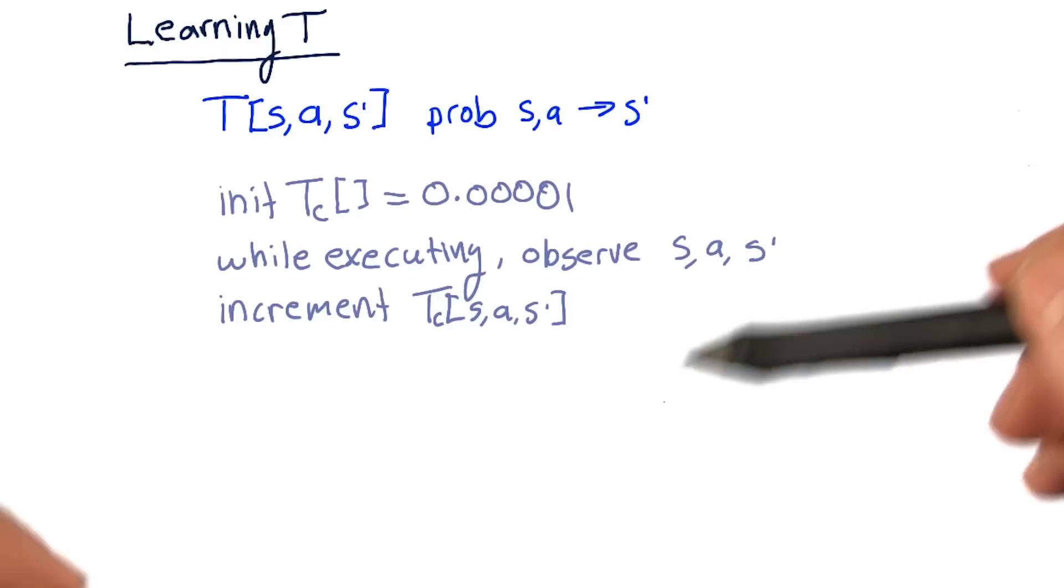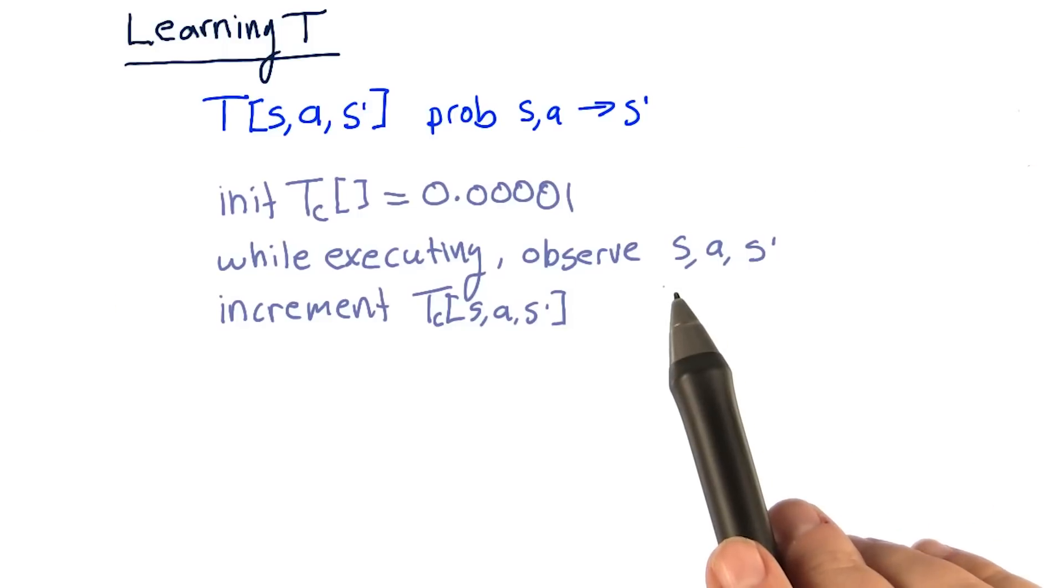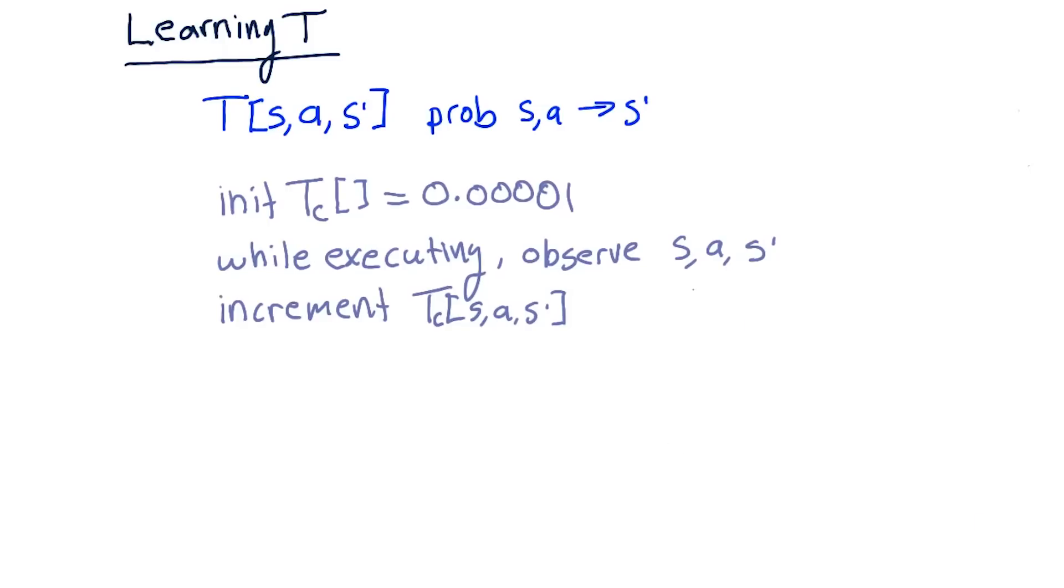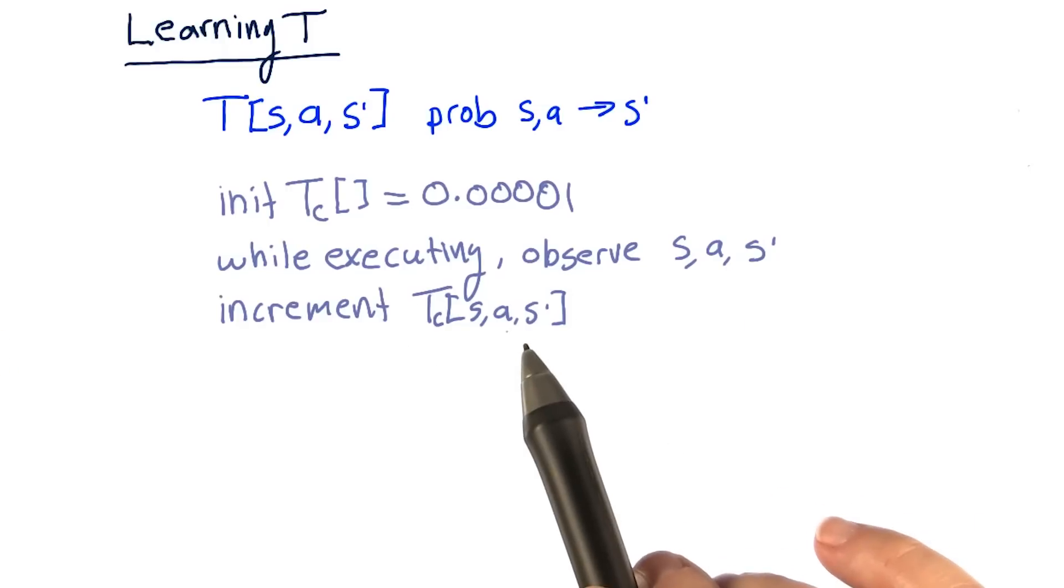Then we begin executing Q learning. Each time we interact with the real world, we observe s, a, and s prime. Then we just increment that location in our T count matrix.